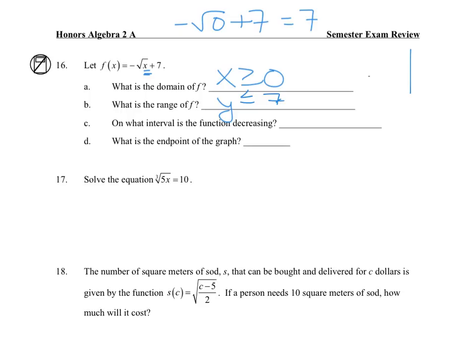If I picture this graph, normally a square root function looks like this. So being reflected, our graph goes this way. So for what interval is it decreasing? That is from every x greater than or equal to 0. And the endpoint, we got that, that's already 0, 7.